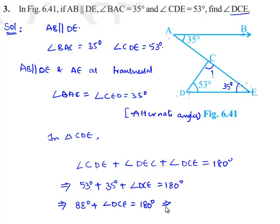That implies angle DCE equals 180 degrees minus 88 degrees, which equals 92 degrees. Therefore, angle DCE is equal to 92 degrees.